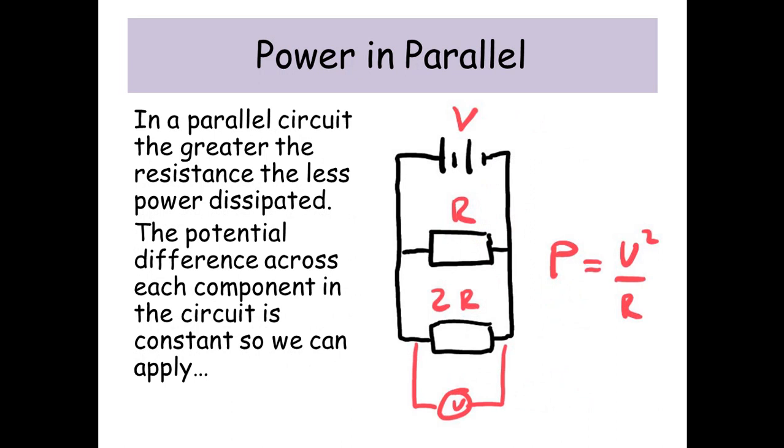One way of thinking about this is: the voltage is the same, but the greater the resistance, the less current that's going to flow. So less current means less power dissipated.